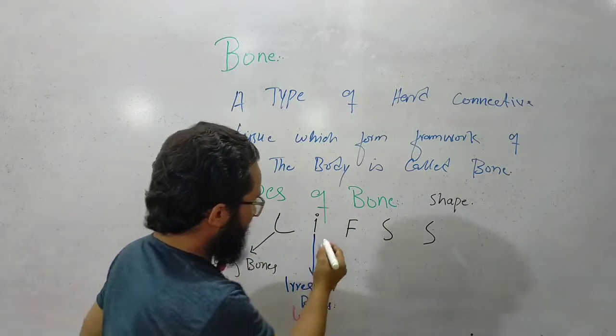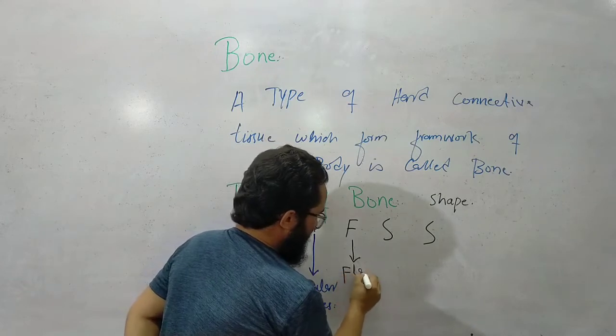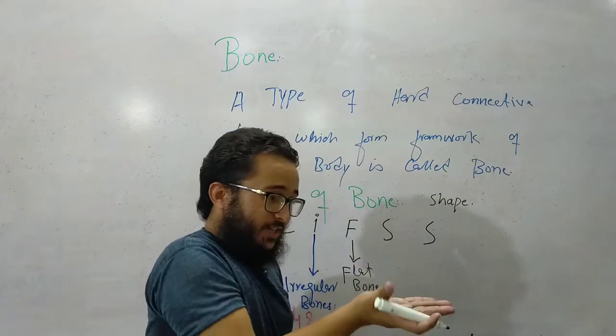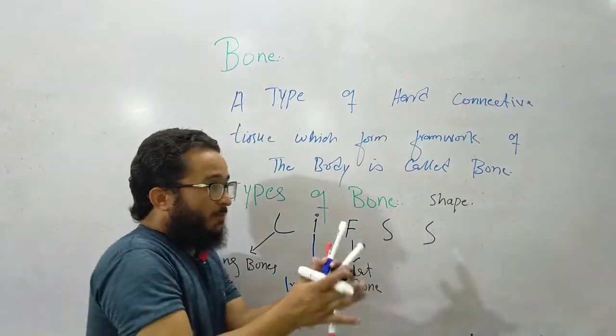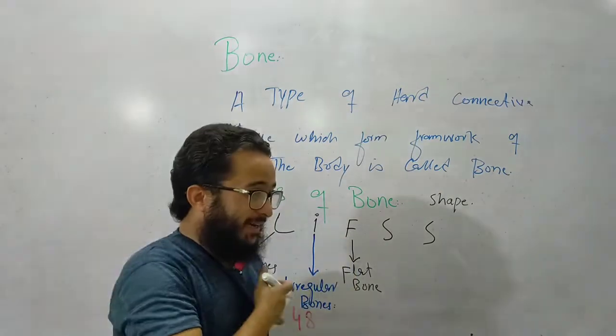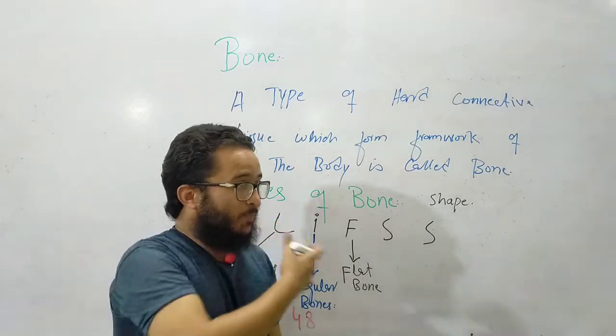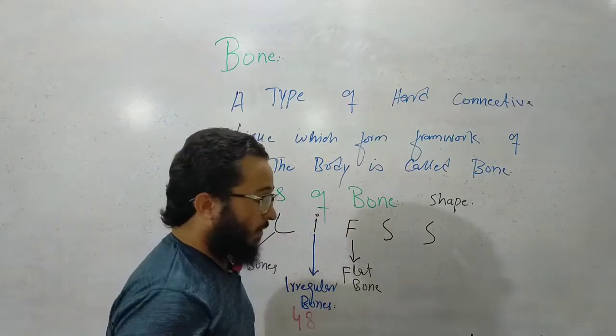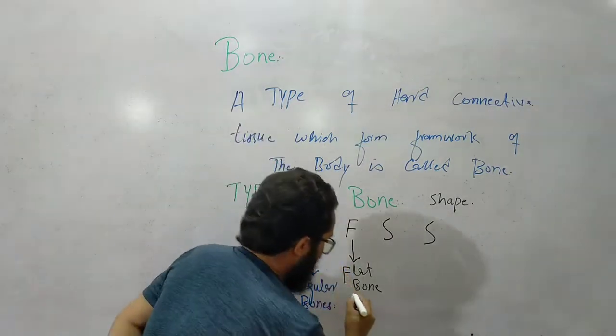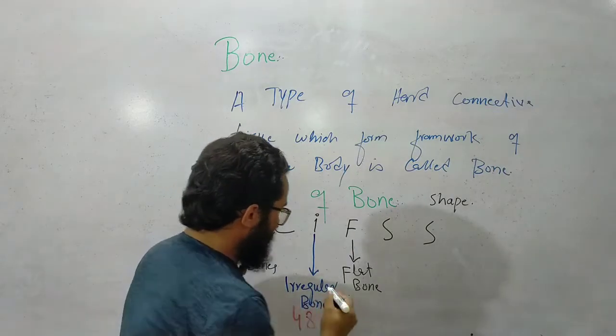F means flat bones. Flat type bones are flat bones. For example, ribs, sternum bone, scapula, frontal, occipital bone. These bones are flat bones. There are 36 bones that are flat bones.